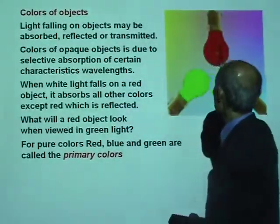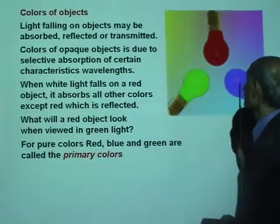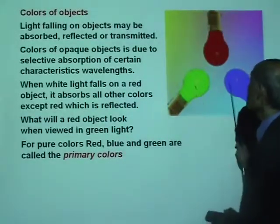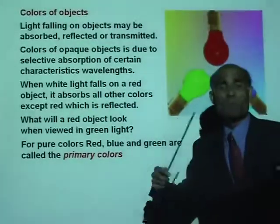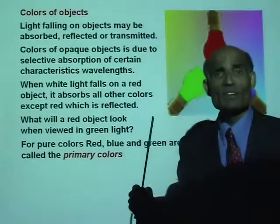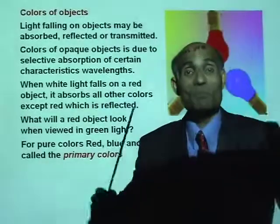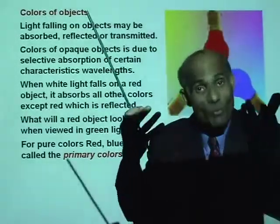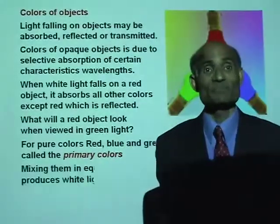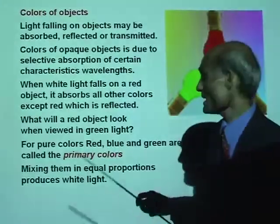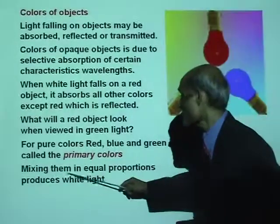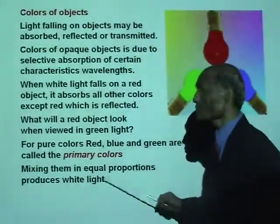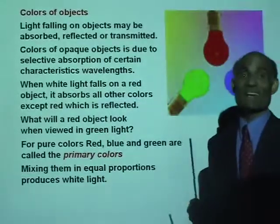Here you have red, green, and blue. If you mix these three primary colors equally, you get white light. Mixing them in equal proportions produces white light.